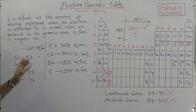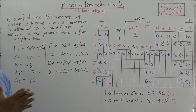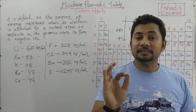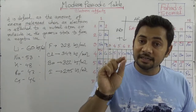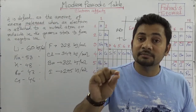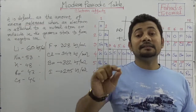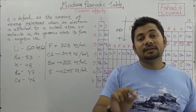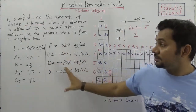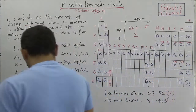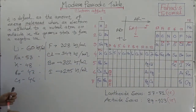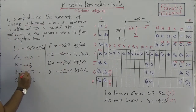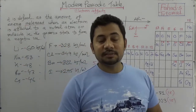To summarize: electron affinity is the amount of energy released when an electron is attached to a neutral atom or molecule in the gaseous state. The released energy of that element is called its electron affinity. The value is negative because it is released energy. Going left to right, atomic radius decreases and electron affinity increases. Going top to bottom in a group, atomic radius increases and electron affinity decreases.